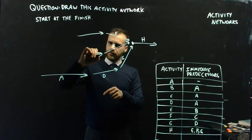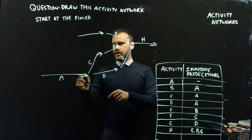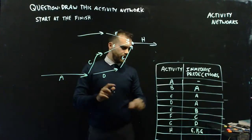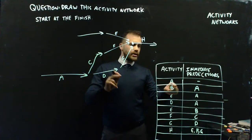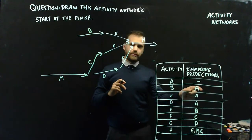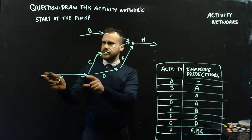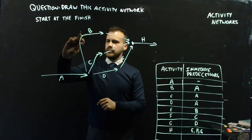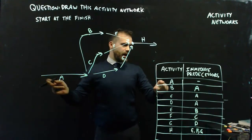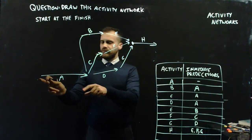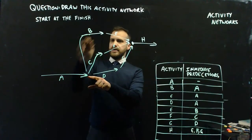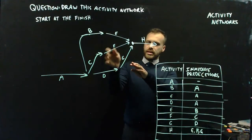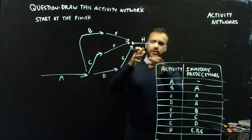Now A is an immediate predecessor of D and C. And B has an immediate predecessor of A as well. So A has to happen before B can happen. And A has no immediate predecessors. So first A happens, and then B, C, and D happen. And then from B, C, and D, E, F, and G can happen. And then from E, F, and G, we finish off by doing H.